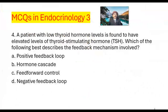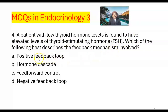Question number 4. A patient with low thyroid hormone level is found to have elevated levels of thyroid stimulating hormone. Which of the following best describes the feedback mechanism involved? A. A positive feedback loop. B. Hormone cascade. C. Feed-forward control. D. Negative feedback loop.